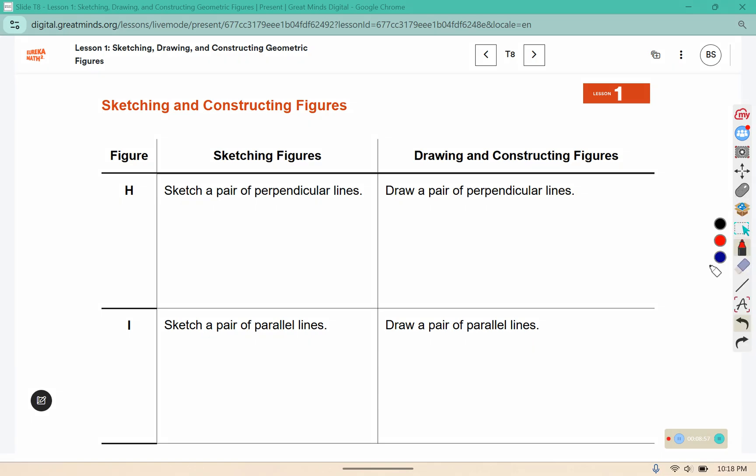Perpendicular lines are lines that intersect at a 90 degree angle. Parallel lines are lines that never intersect.